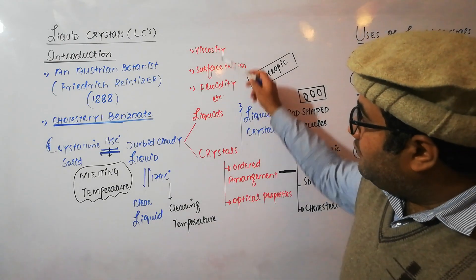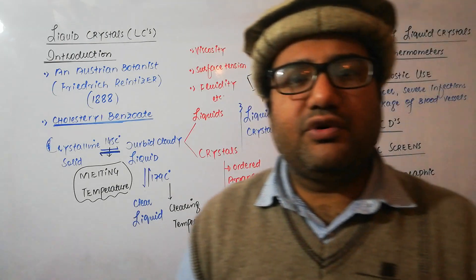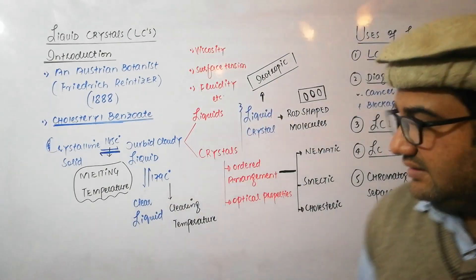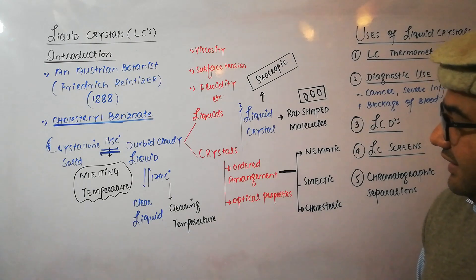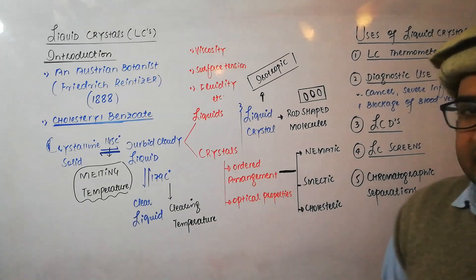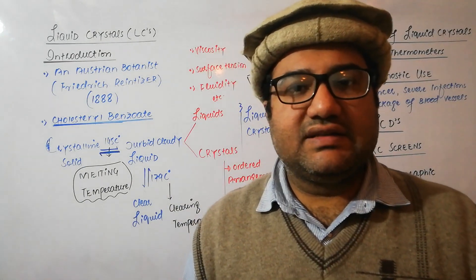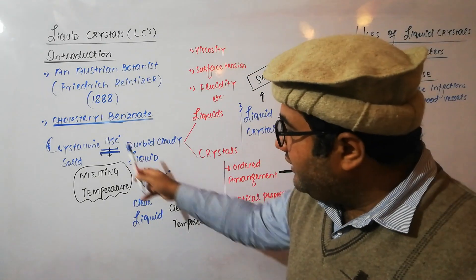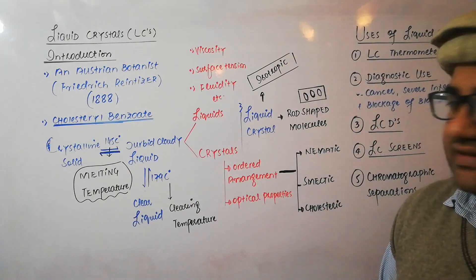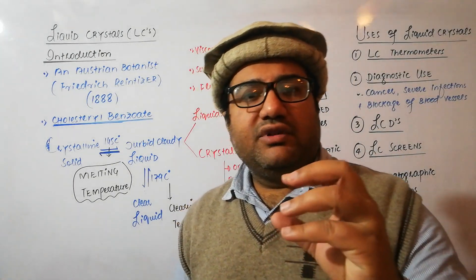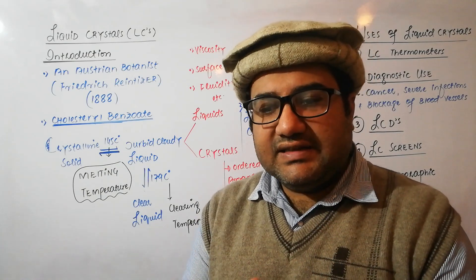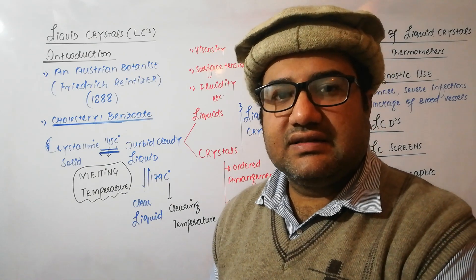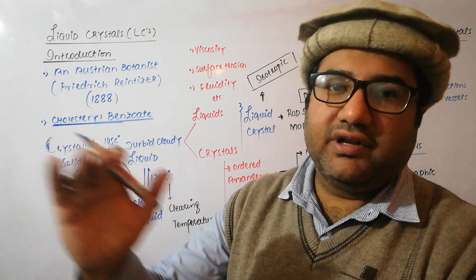But there are also some properties of this intermediate state that match with crystals, like a somewhat ordered arrangement of the particles and especially the optical properties. These are the properties of this intermediate state that match with crystals. So, keeping in view that it has some properties matching liquids and some matching crystals, it was named the liquid crystal.